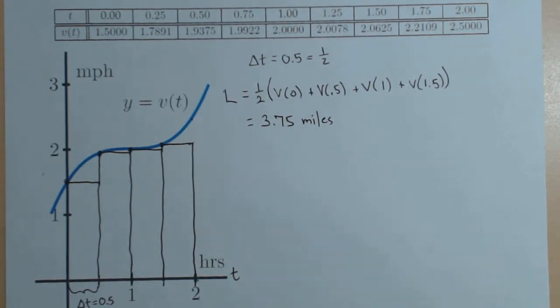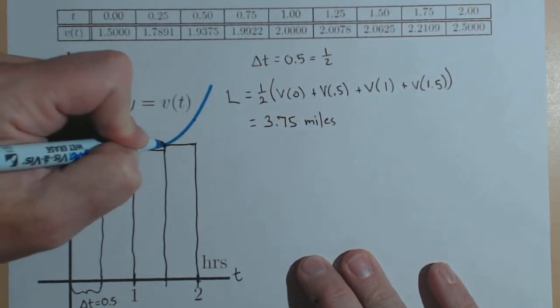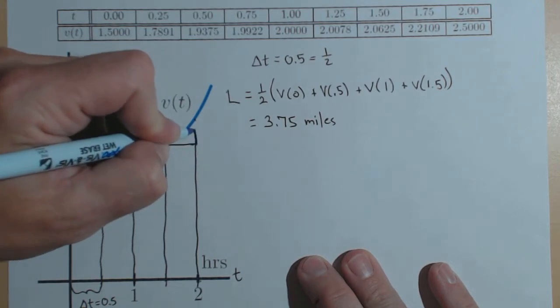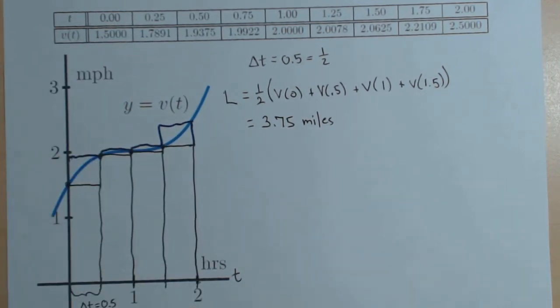The tops of our rectangles would have gone the other way. So they would have looked like this. That would have been what's called a right-hand rule.